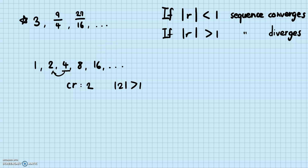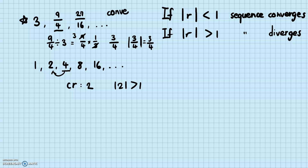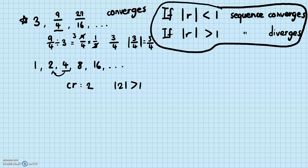What about the sequence three, nine-fourths, twenty-seven-sixteenths? What is the common ratio? Divide a term by its previous term: nine-fourths divided by three equals nine-fourths times one-third, which equals three-fourths. The common ratio is three-fourths. The absolute value of three-fourths is three-fourths, which is less than one — so this sequence converges.